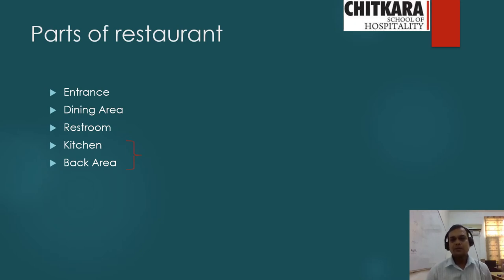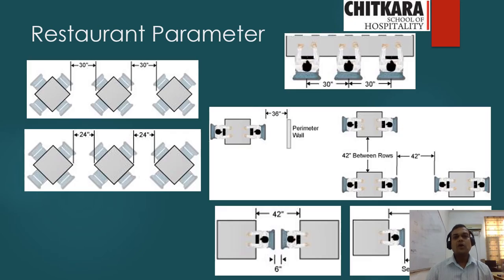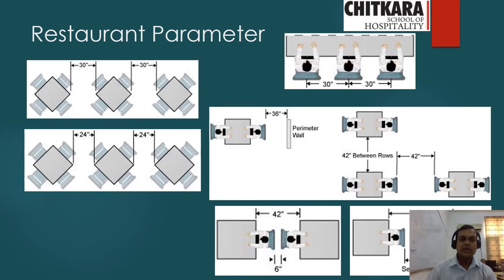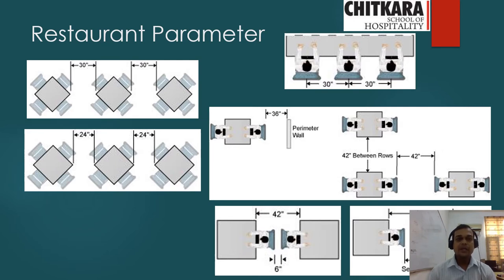Regarding restaurant parameters, looking at the picture on the upper left you will find three different diagonal tables, each for a cover of four. The international standard says when placing diagonal tables we can fit more tables inside the restaurant. When square tables are used diagonally, the space between the edges of both tables should be 30 inches — that is the international standard.